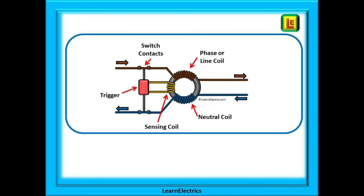Shown here is a simple drawing of the inside of an RCD. We have a central core of ferromagnetic material and the incoming line or phase wire, shown here in brown, wraps around the core. The outgoing neutral wire in blue wraps around the same core as it leaves the circuit. The current in the line and neutral will both cause a magnetic disturbance in the core which is detected by the sensing coil. If they are both equal — what goes in comes out — then they will cancel each other out and the sensing coil will register zero difference.